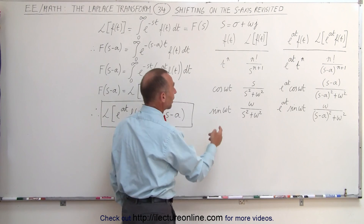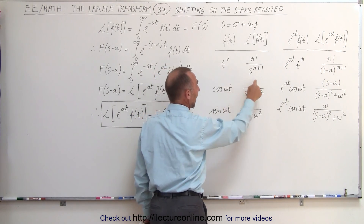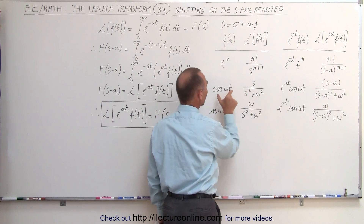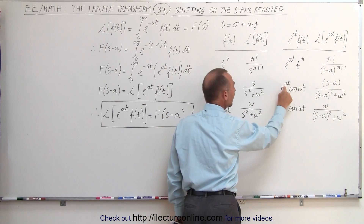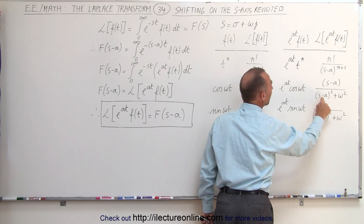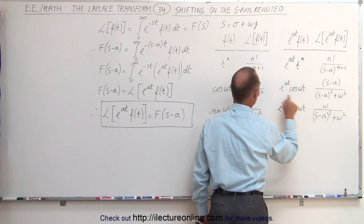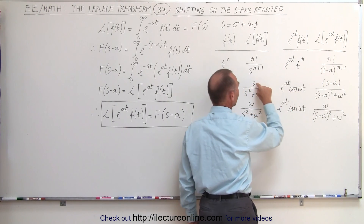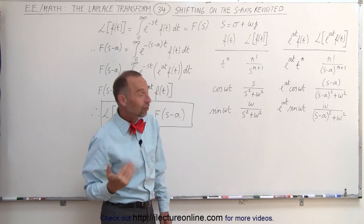Same with the cosine. If we take the cosine of omega T, the Laplace transform is S divided by S squared plus omega squared. If we multiply the time domain function by E to the A T, that simply causes a shift in the S domain by minus A. So instead of writing S squared, we write the quantity (S minus A) squared, and the S in the numerator becomes S minus A.